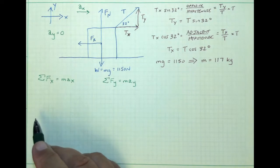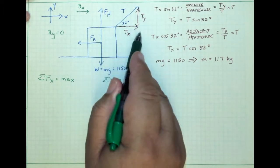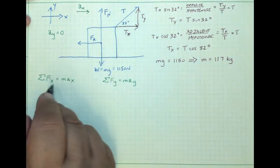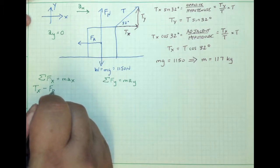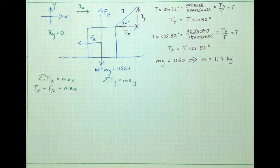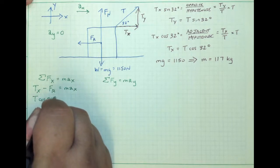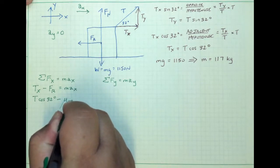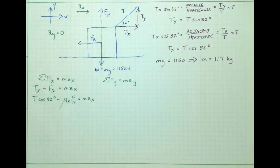Our task is to find a_x. Examining the diagram, we see two forces in the x direction: the tension force to the right and the friction force to the left. We combine them with the tension x-component being positive and the friction force being negative, set equal to mass times the x-acceleration. The x component of tension is T·cos(32°), and the kinetic friction force is the coefficient of kinetic friction multiplied by the normal force. We find ourselves needing to find the normal force before we can find the friction force, noting this is kinetic friction with μ_k = 0.417.